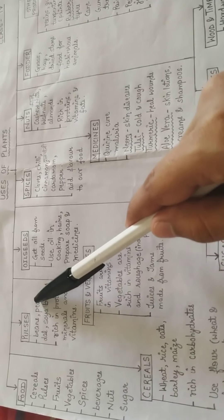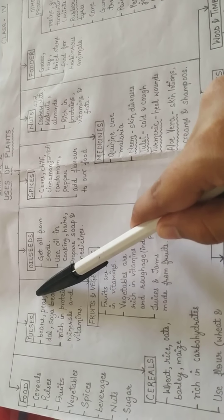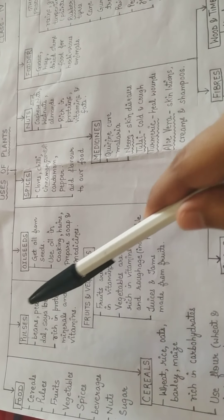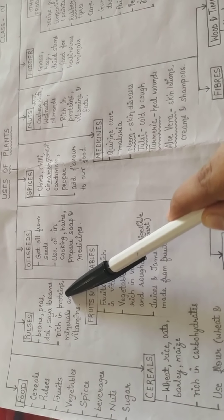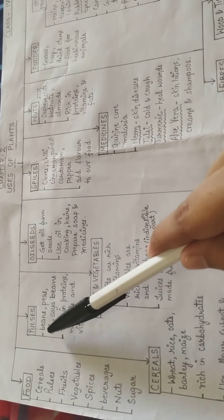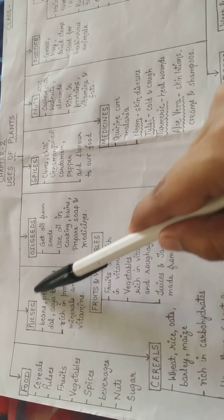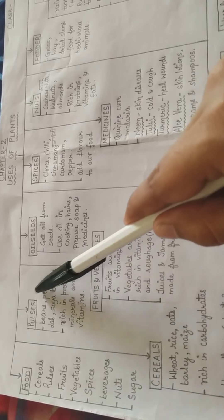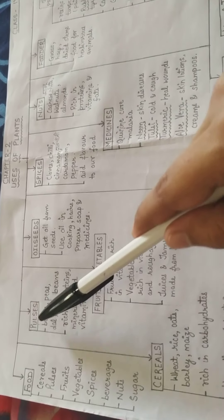The next one is pulses. Pulses are rich in proteins. Some examples of pulses are beans, peas, dal, and soya beans. We get pulses from plants and they are rich in proteins.